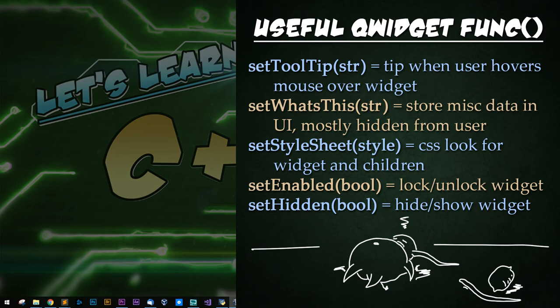Set style sheet: sets the CSS style or look of the widget and all of its children. Set enabled: this is how you lock and unlock widgets or even the whole window. Set hidden: this is how you show or hide widgets or even the whole window.